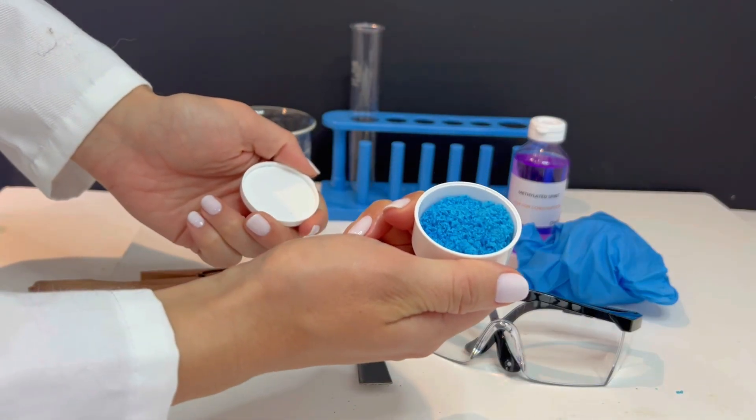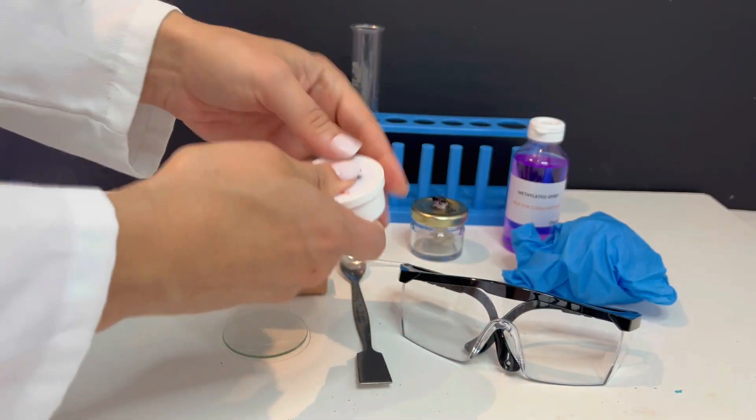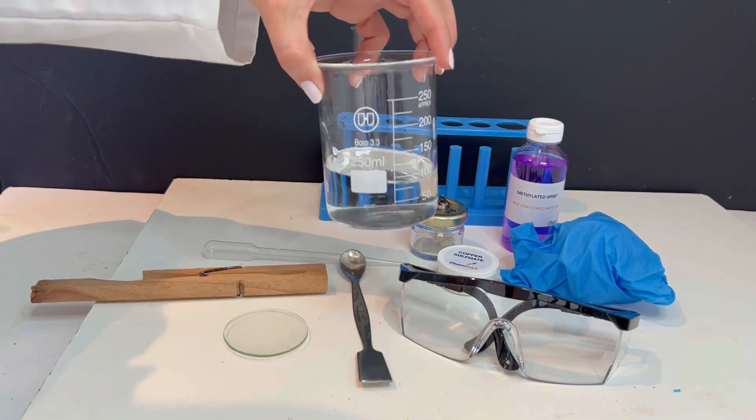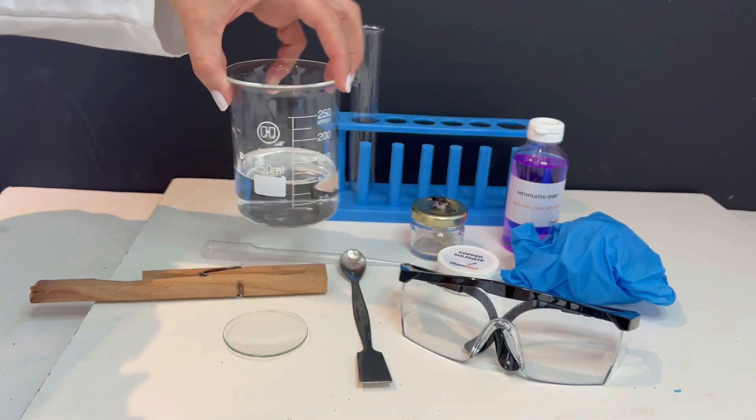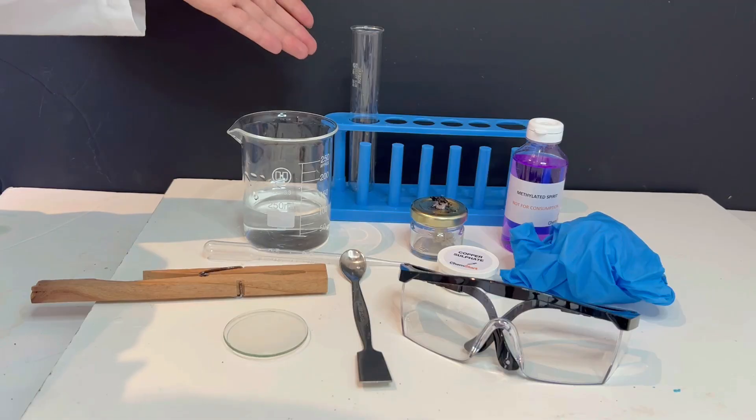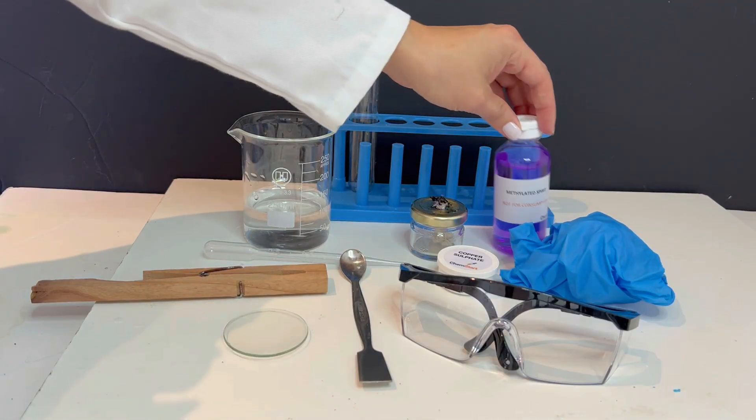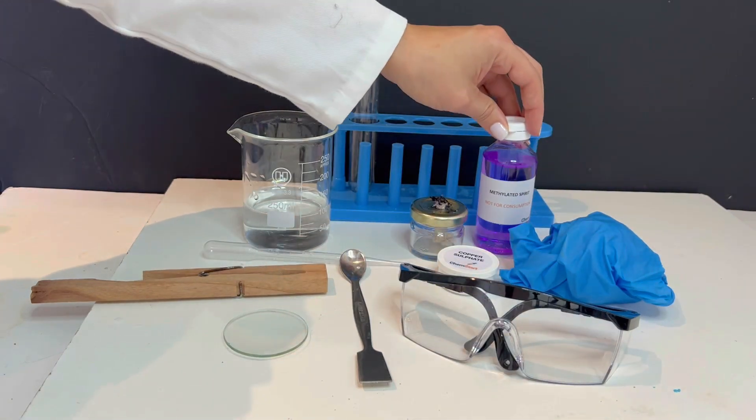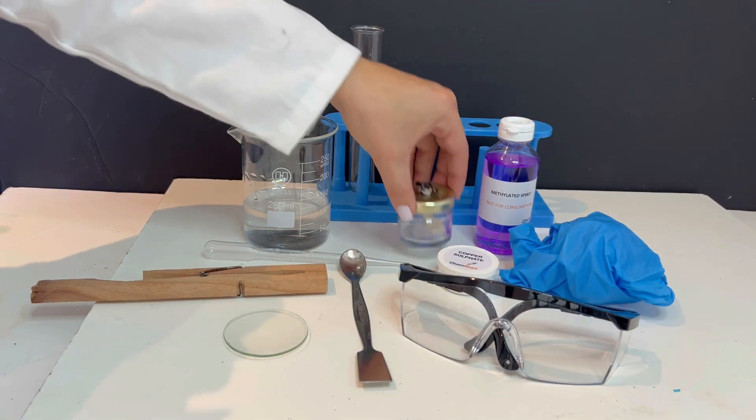You will need copper sulfate, then you will need a beaker with water, you will need a test tube rack and a test tube, you will need methylated spirits, you will need a spirit burner.